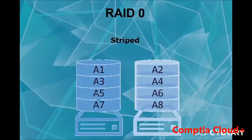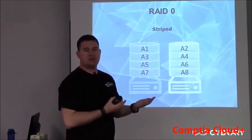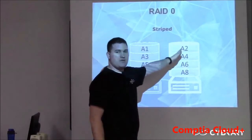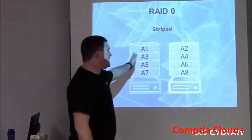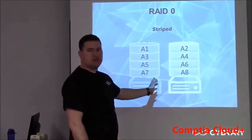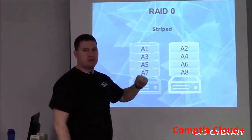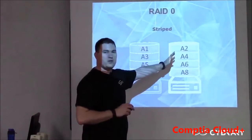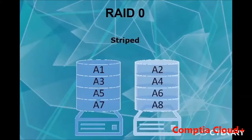RAID 0 is striping. This is where information is striped from one hard drive to the next hard drive. If you take a file, say for instance Firefox, if you have two hard drives set up with RAID 0, the program Firefox — half of it might be saved on one drive and the other half on the other. This allows quick access. It will read a little bit from each drive, and each hard drive will work independently.